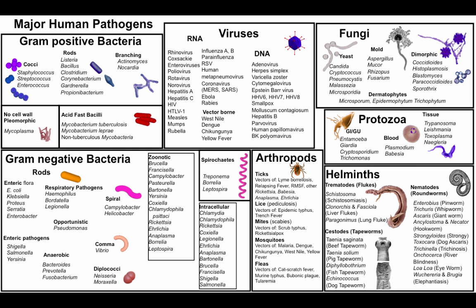Before we start, we'll take a 30,000-foot view at our bug map and think about healthcare-associated infections and the likely pathogens. Two of the more common ones we see are Staphylococcus, particularly Staphylococcus aureus, and methicillin-resistant Staphylococcus aureus, or MRSA.